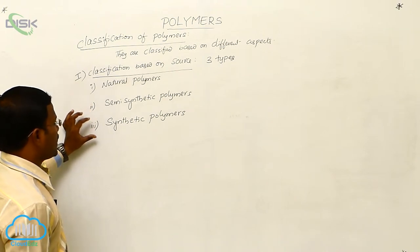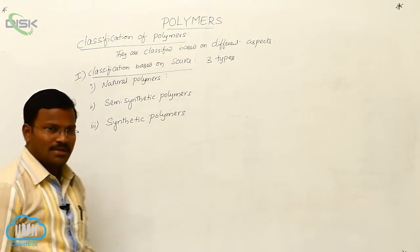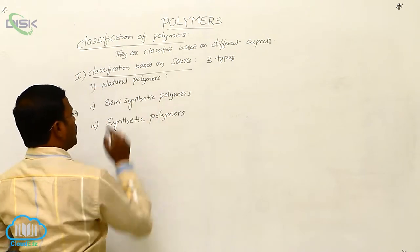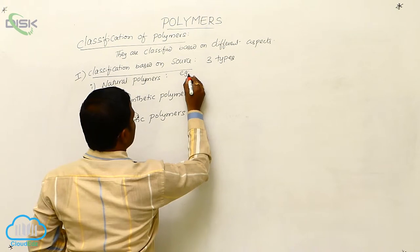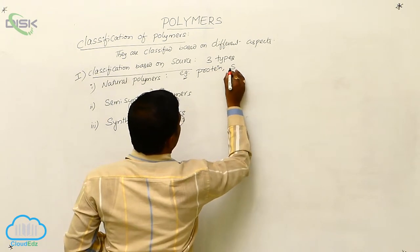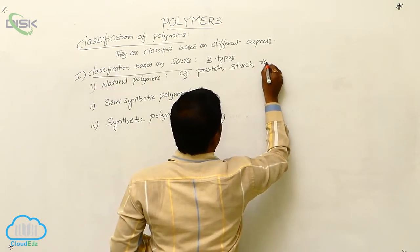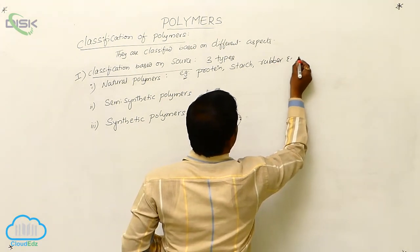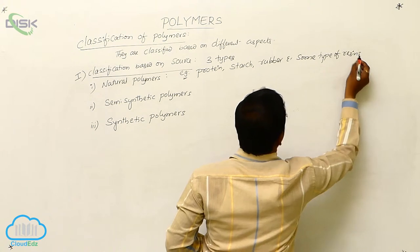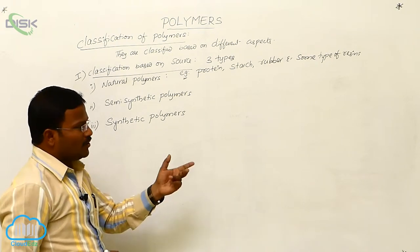So let us learn what are natural polymers. The polymers which are available in nature — especially those that exist in animals and plants — are called natural polymers. Examples for natural polymers are proteins, starch, polypeptides (which are proteins), rubber, and some types of resins. These all come under the natural polymer category.